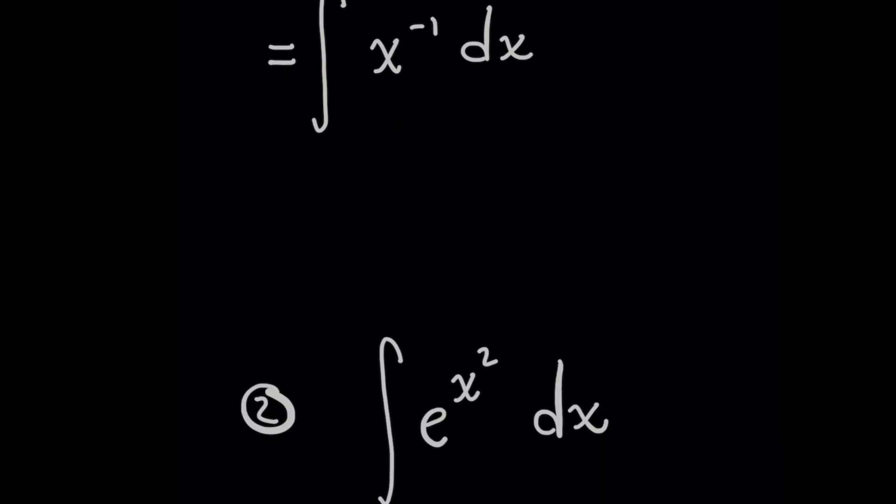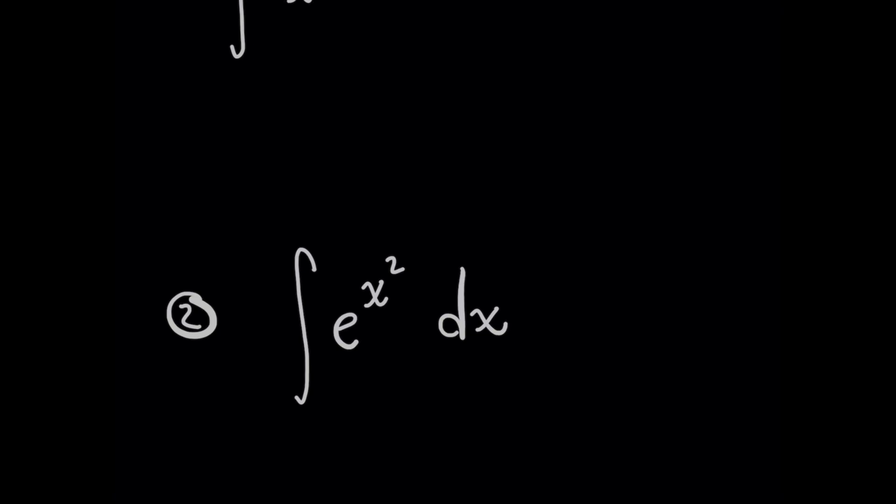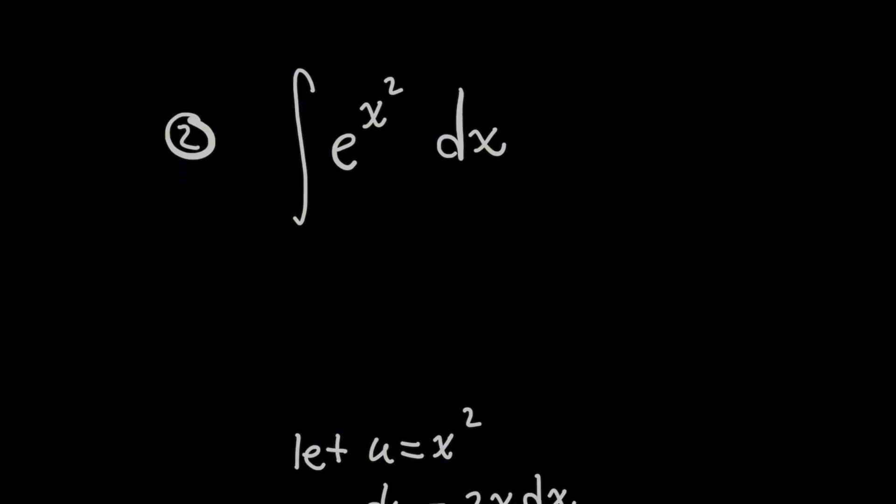And moving on to the next problem while you're thinking about that, the integral of e to the x squared dx on the surface looks like a really easy e power problem. But when you try u substitution, things are going to start falling apart.